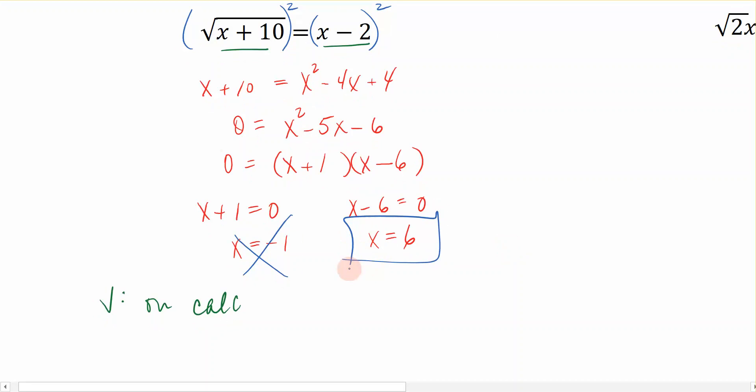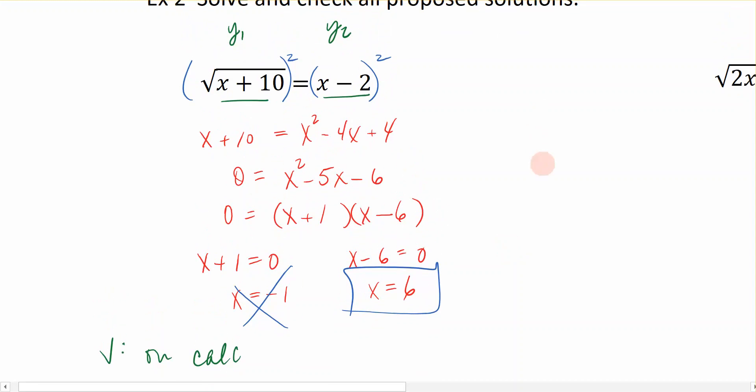It's important to check solutions. The reason extraneous solutions can appear is that when we square our equation, we can introduce values that do not actually occur on our original equations.